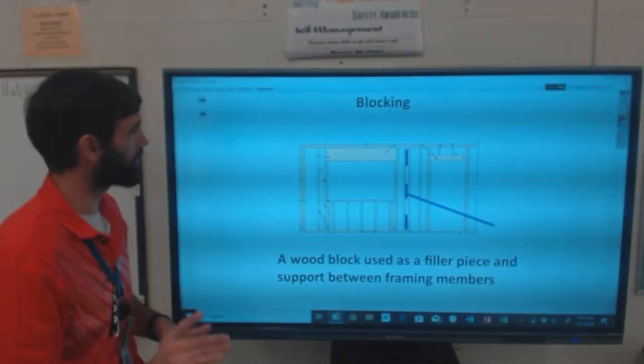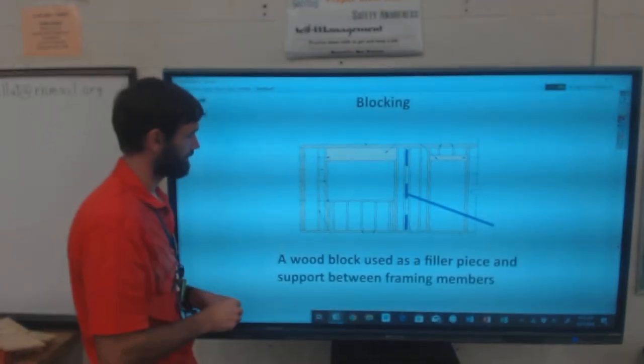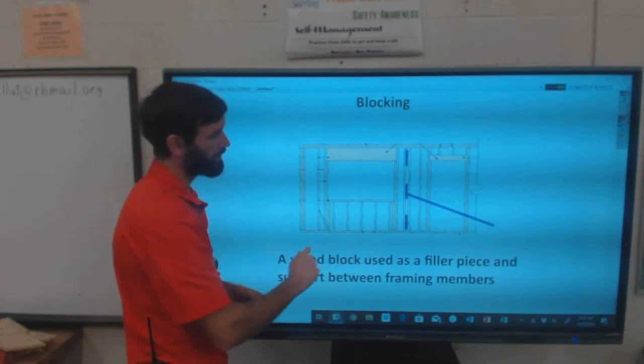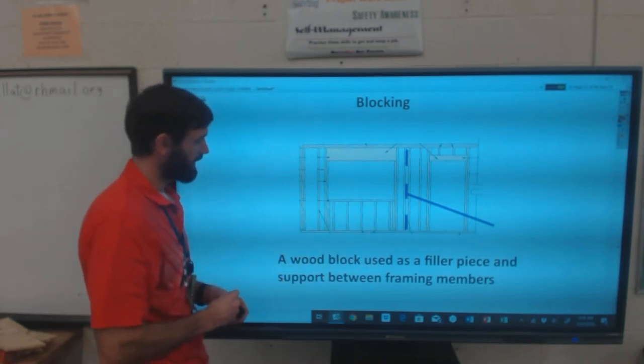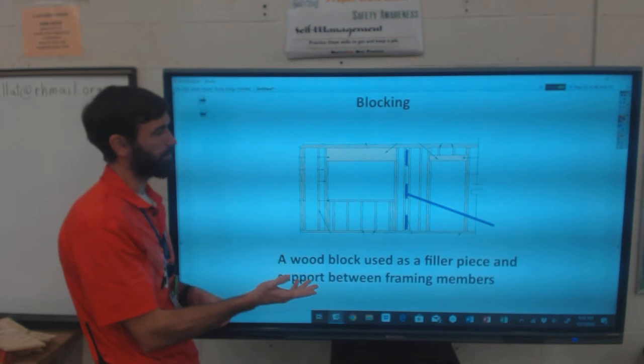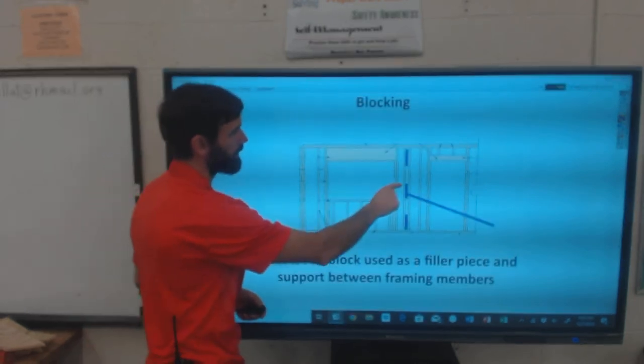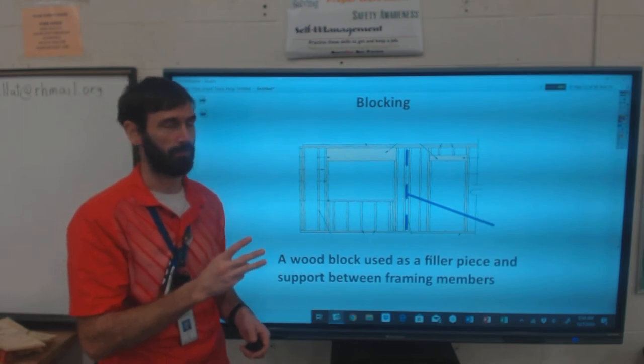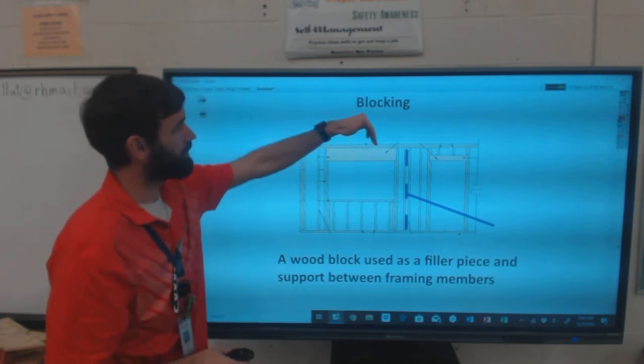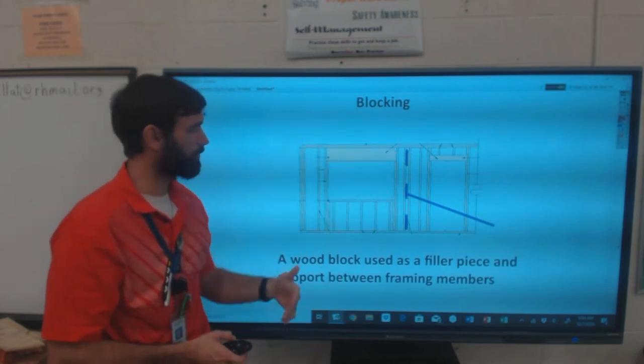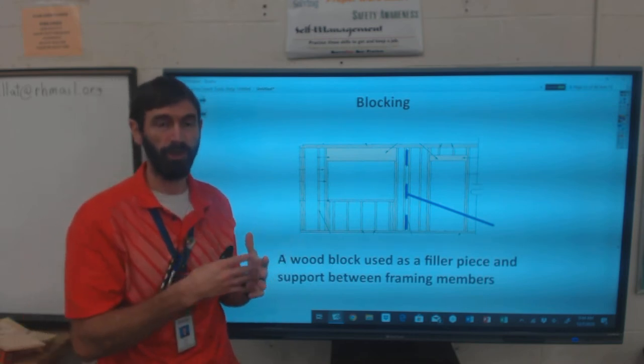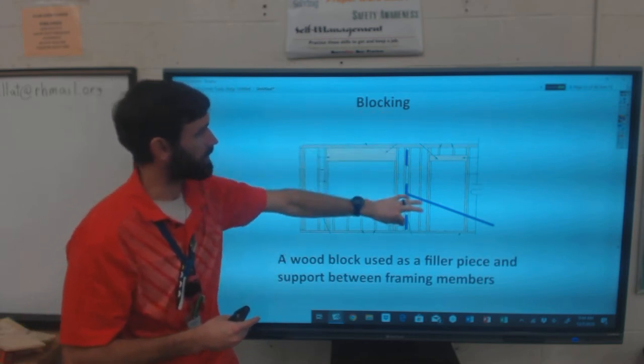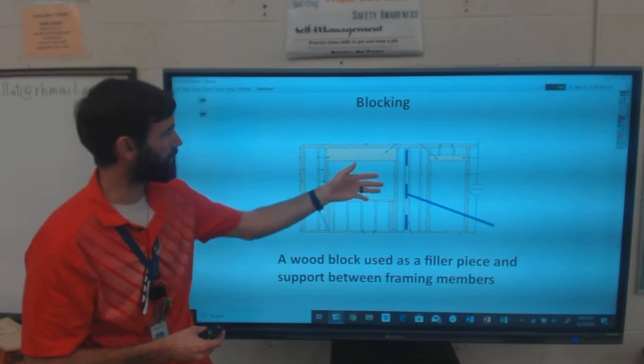One more component to go over is blocking. That's a wood block used as a filler piece and support within framing members. It's highlighted in blue here, here, and here. So in that partition assembly there's three pieces of blocking, just so you can space these two boards out so there's a place to connect that interior wall.